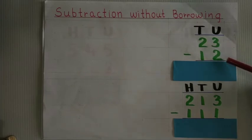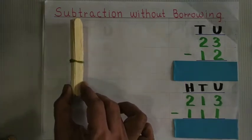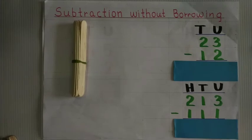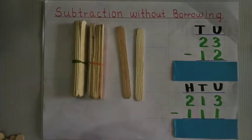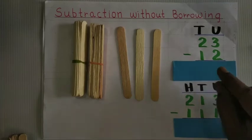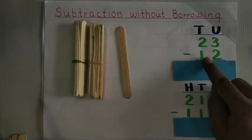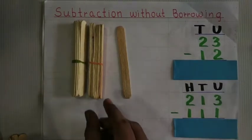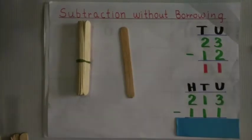23 minus 12. I am taking the ice cream sticks. Bundle of 10. We have 20 and 1, 2, 3. Now, how to subtract? That means to take away. How many units have to be taken? 2 — so 1 and 2. How many tens have to be taken out from 2 tens? 1 ten. Now, what is left? 10 and 1 — 11. 11 is the answer.